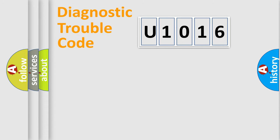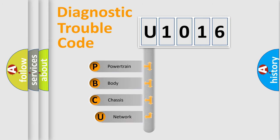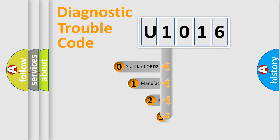Let's do this. First, let's look at the history of diagnostic fault code composition according to the OBD2 protocol, which is unified for all automakers since 2000. We divide the electric system of automobile into the four basic units: Powertrain, Body, Chassis, and Network. This distribution is defined in the first character of the code.